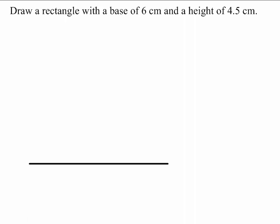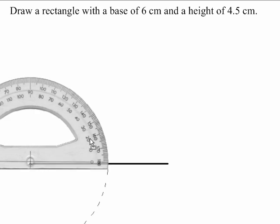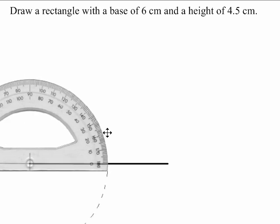The second thing I do is place the protractor at the end of this line and draw a 90 degree angle. I make it 4.5 cm long.